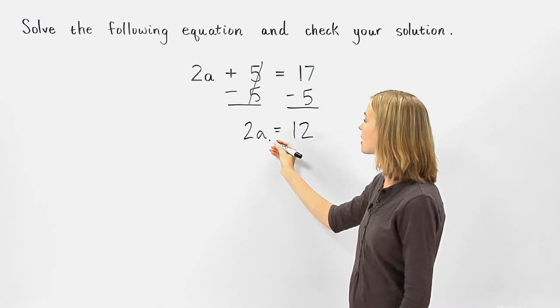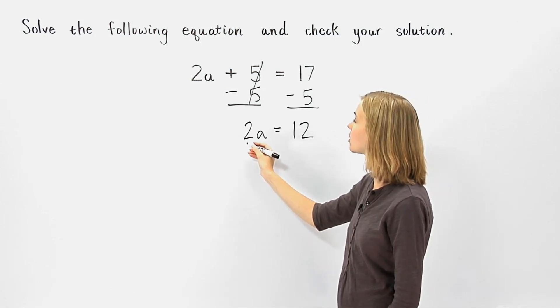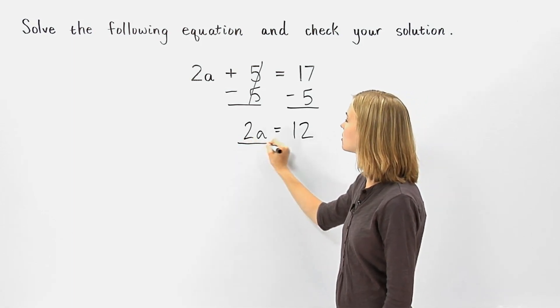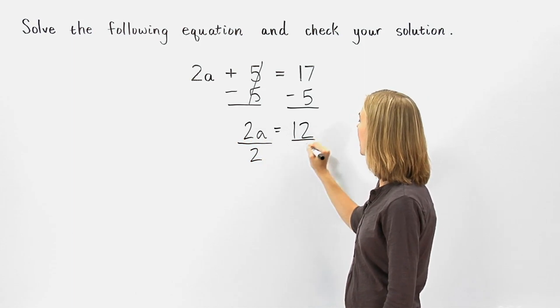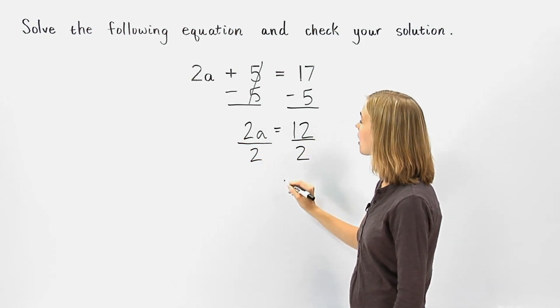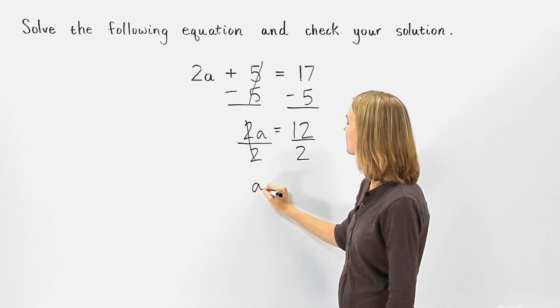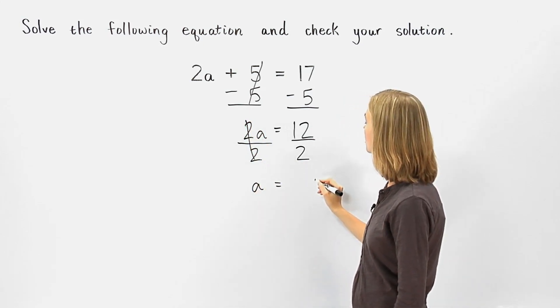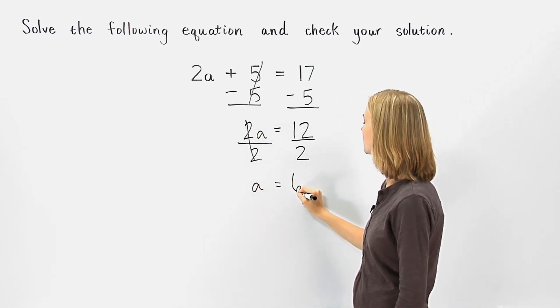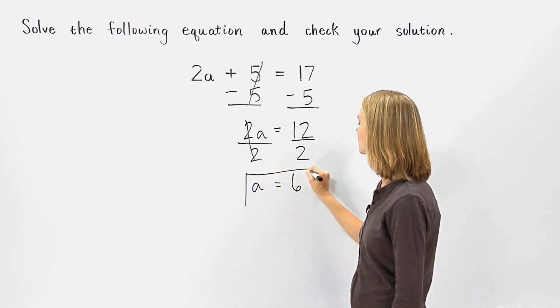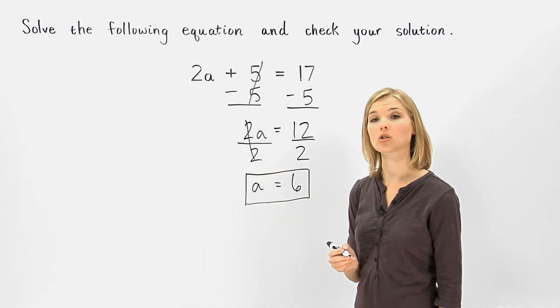Now, to get a by itself, since a is being multiplied by 2, we need to divide by 2 on both sides of the equation. On the left side of the equation, the 2s cancel, and we have a. And on the right side of the equation, 12 divided by 2 is 6. So a equals 6, which is the solution to our equation.